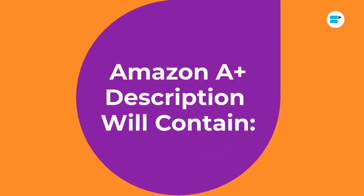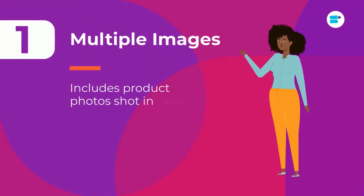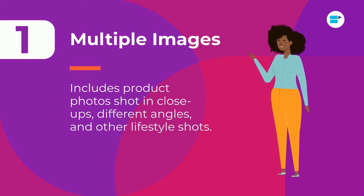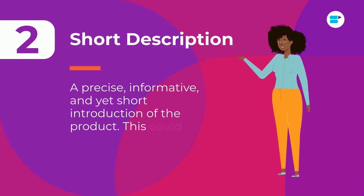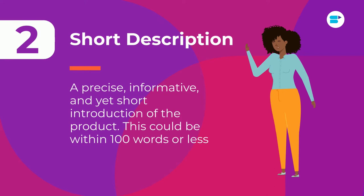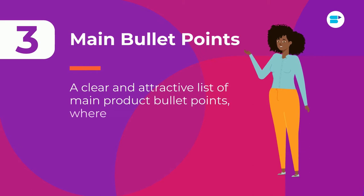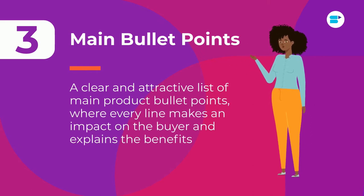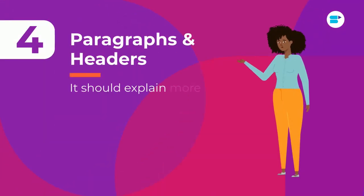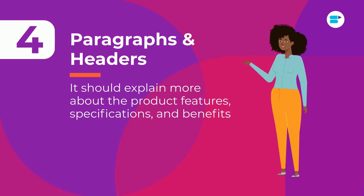Now let's understand the features of A-plus content. An Amazon A-plus description will contain: one, multiple images of the product, including product photos shot in close-ups, different angles, and other lifestyle shots; two, a precise, informative, and yet short introduction of the product — within 100 words or less; three, a clear and attractive list of main product bullet points where every line makes an impact and explains the benefits; four, concise paragraphs with clear, easily readable headers that explain more about the product features, specifications, and benefits.